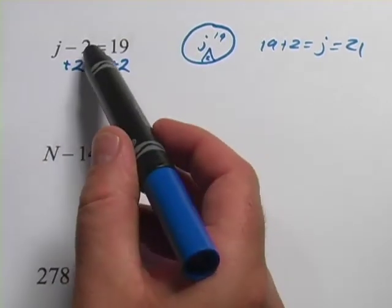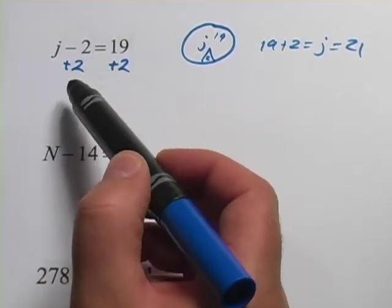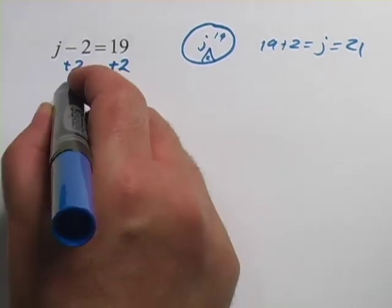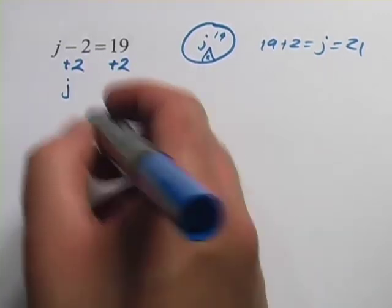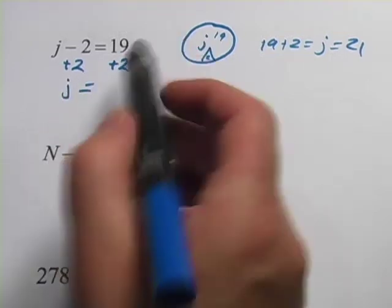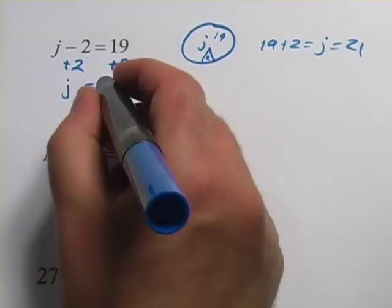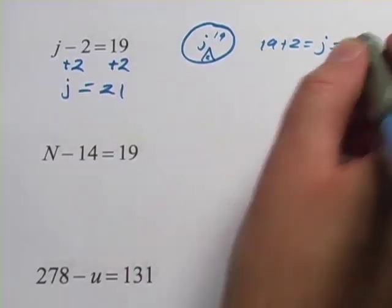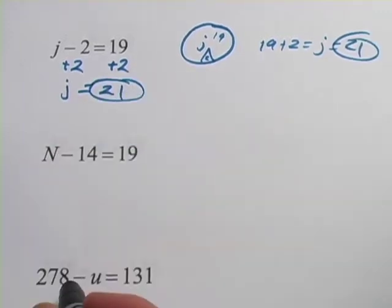Now on this left side, minus 2 and plus 2 come out to 0 if you add those together. So I just get j left over there. On this side, I have 19 plus 2 and that's 21. Well, that's exactly what we got by visualizing the problem.